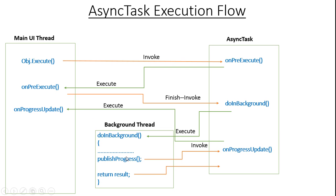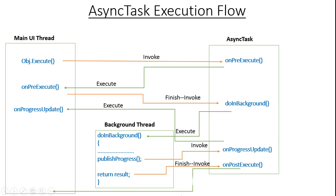Finally, after finishing the background job within the doInBackground method, the system returns the result back into the onPostExecute method available in AsyncTask. The execution of doInBackground finishes, onPostExecute is invoked inside AsyncTask, placed into the UI thread, and executed — so that you can publish the result on the user interface.